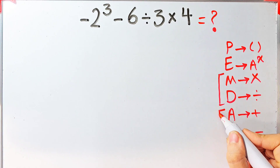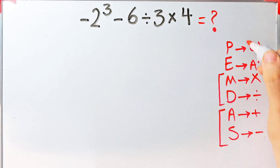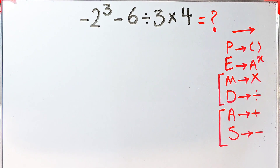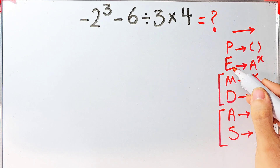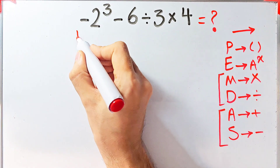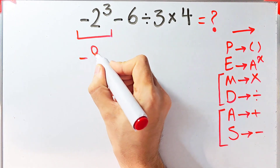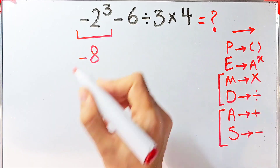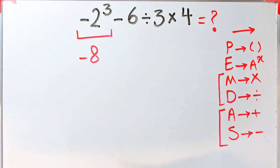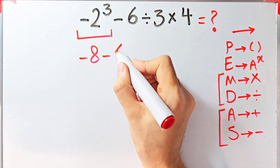When we have both operations at the same priority level in an expression, we start from the left and simplify. According to the PEMDAS rule, first we simplify the exponent: negative two to the power of three equals negative eight. Now we have negative eight minus six divided by three, then times four.